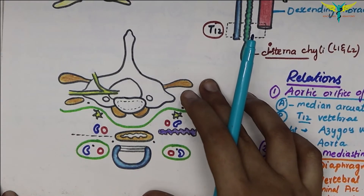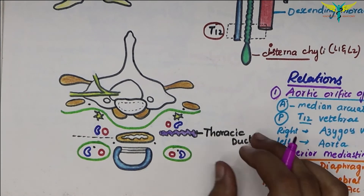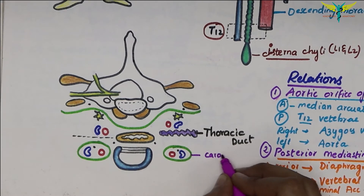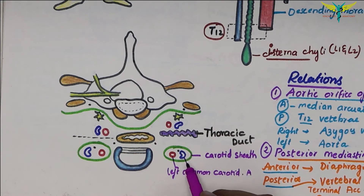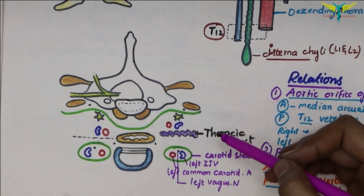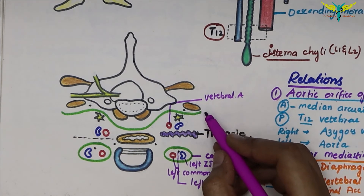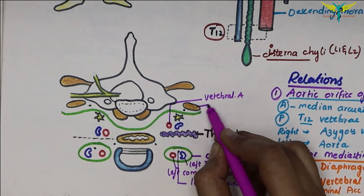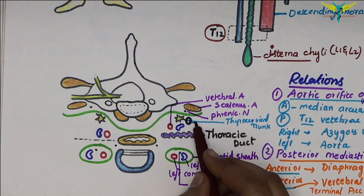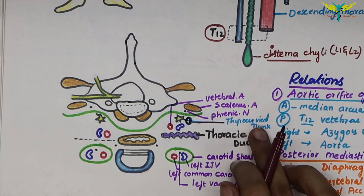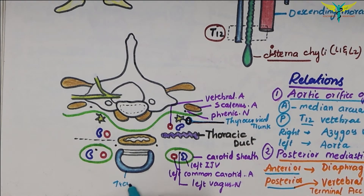At the root of the neck, the anterior relations of the thoracic duct are the carotid sheath containing the left common carotid artery, the left internal jugular vein, and the left vagus nerve. The posterior relations are the vertebral artery, the medial border of the scalenus anterior muscle, the phrenic nerve, and the thyrocervical trunk with its branches — the suprascapular, transverse cervical, and inferior thyroid arteries — as well as the trachea and esophagus.